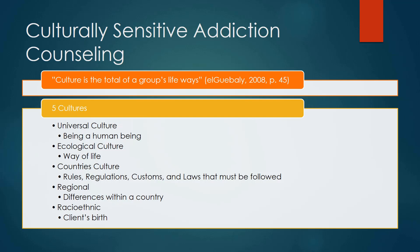Culture is a total of a group's life's way. There are five approaches to culture. One is universal culture — being a human being. Two is ecological culture — the way we live our life. Three is a country's culture: the rules, regulations, customs, and laws that must be followed according to your country.